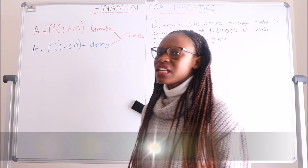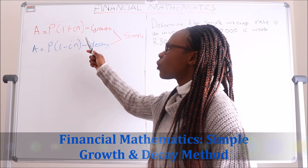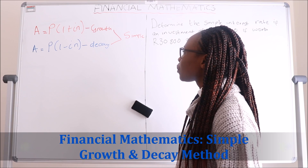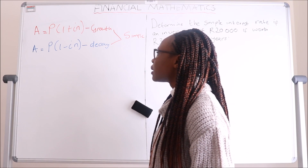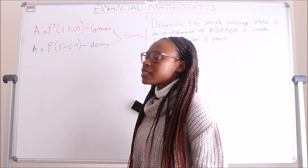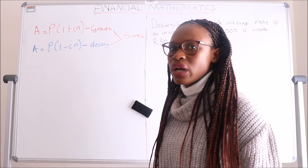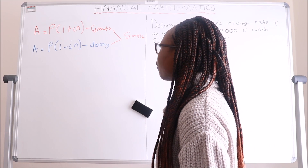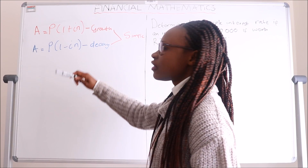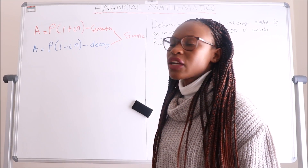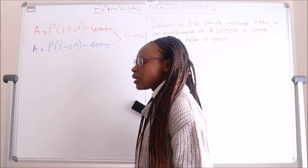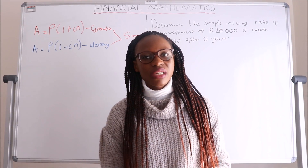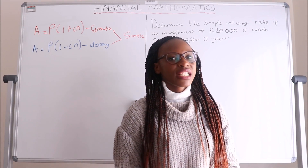Remember in the previous lesson I introduced you to these two equations — the first one is for simple growth and the second one is for simple decay. Simple decay and growth are also known as the straight line method in financial mathematics, where the first is when your investment is increasing in value and the second is when your investment is depreciating in value.